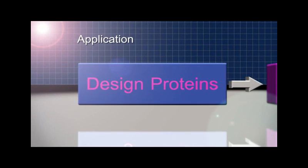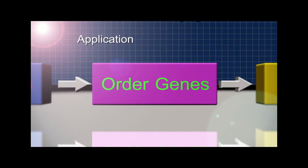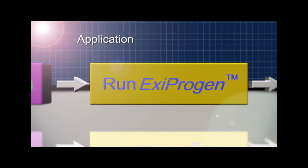With Exiprogen, simply design your proteins and genes, order the genes, run Exiprogen, and get 16 purified proteins.